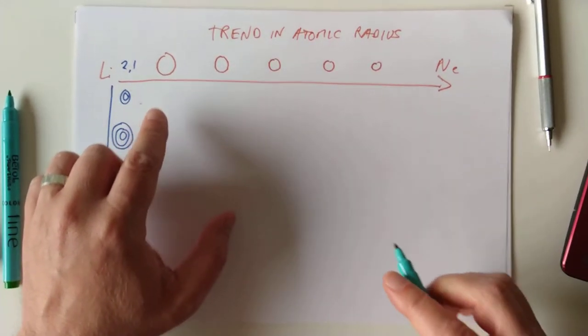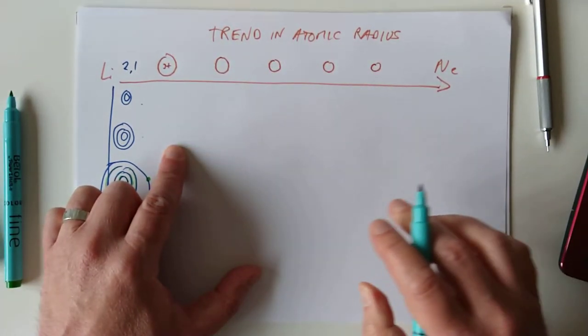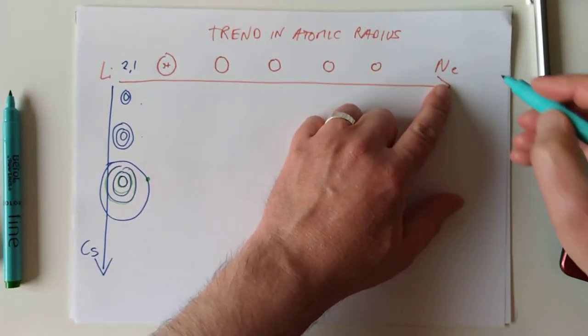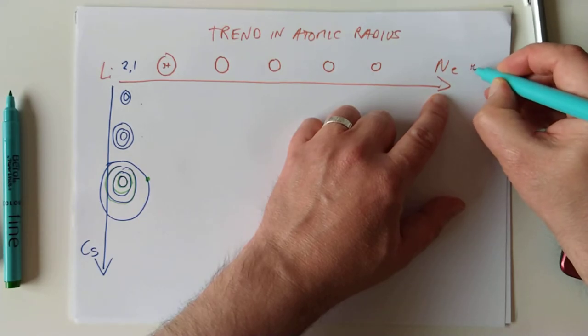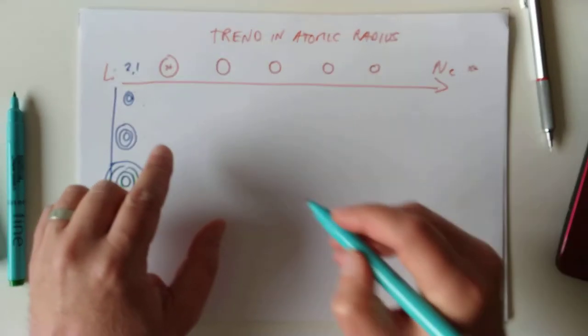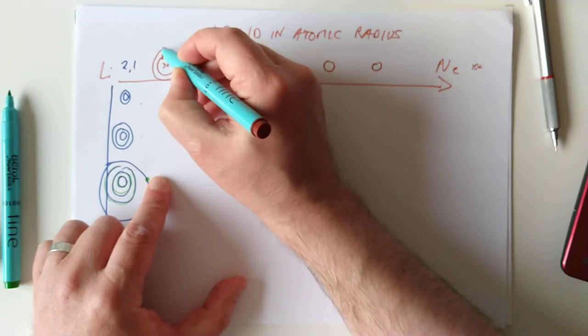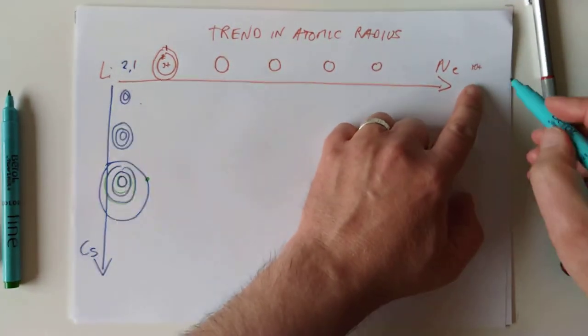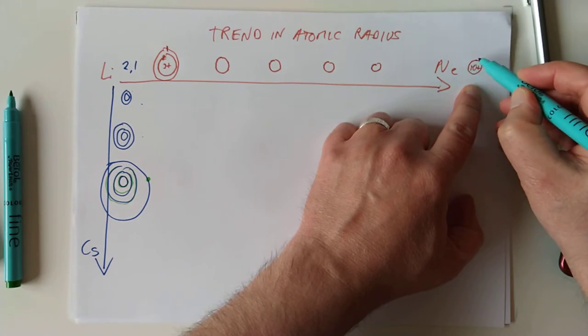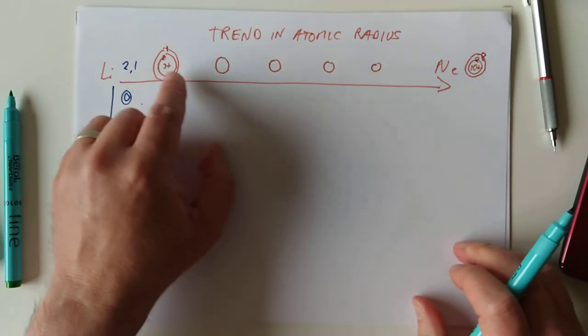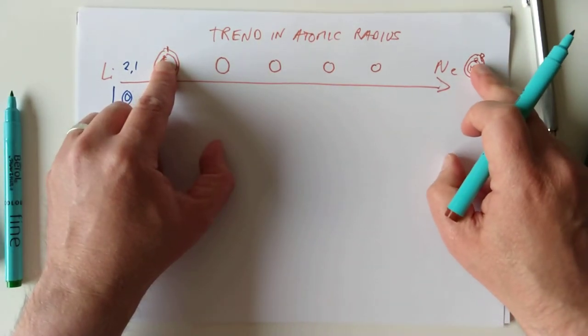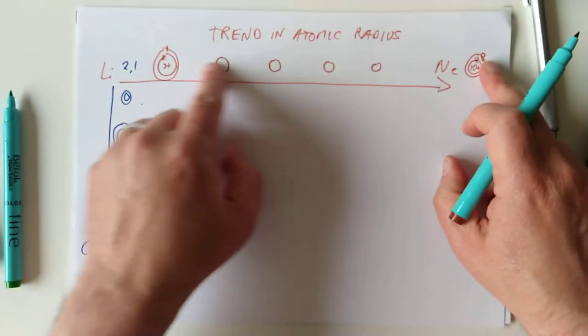If we have a look at lithium, it's got three protons in the centre, and if we skip all the way across to neon, it will have ten protons in the centre. The layers of electrons for lithium are two and then one, and the layers of electrons for neon are two and eight. Now, two layers, two layers. So there's no extra shielding being added here.